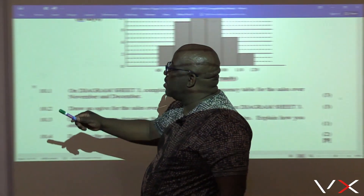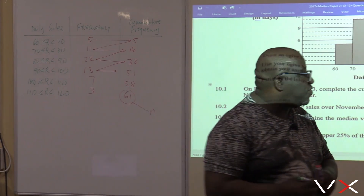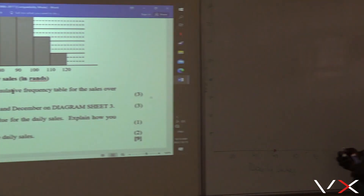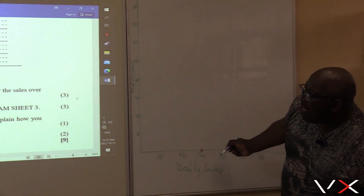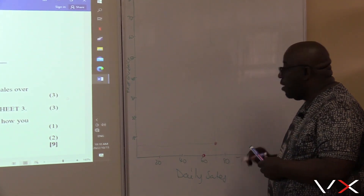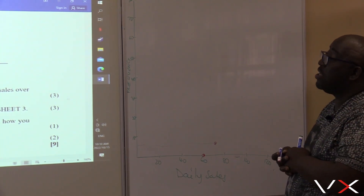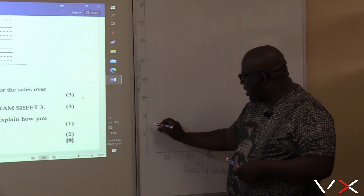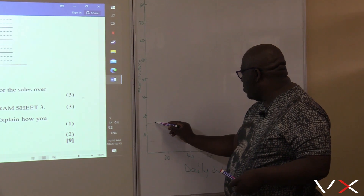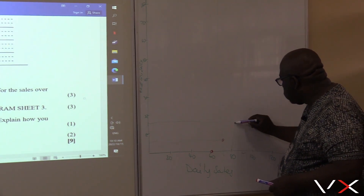The next coordinates use the upper limit and cumulative frequency. The first one is (70, 5). The next one is (80, 16). After that is (90, 38). Let's sketch these points — 70 and 5 is here, 80 and 16: this is where 80 is and 16 will be just above 15, somewhere there. So 80 and 16 is plotted at that position.